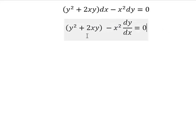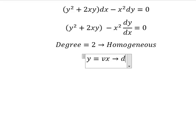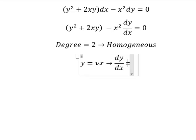Next we have x square, xy, y square. This is about degree number two, so we can use homogeneous. I will put y equals to vx, dy over dx.